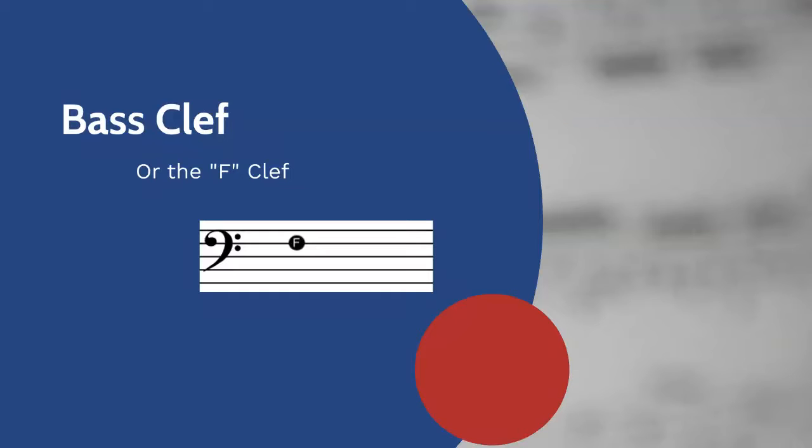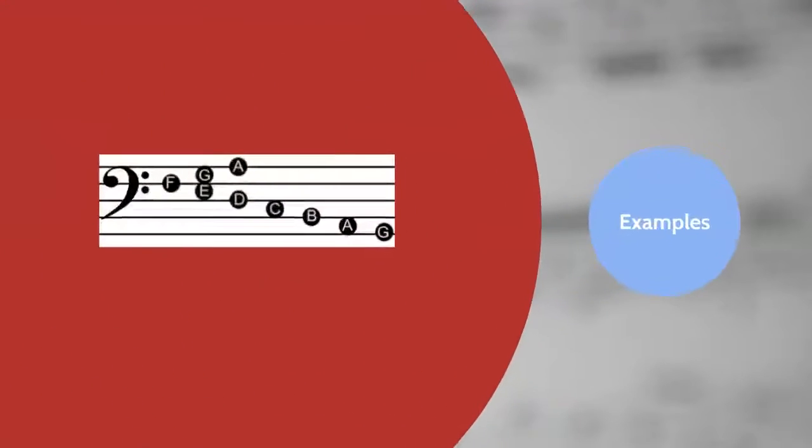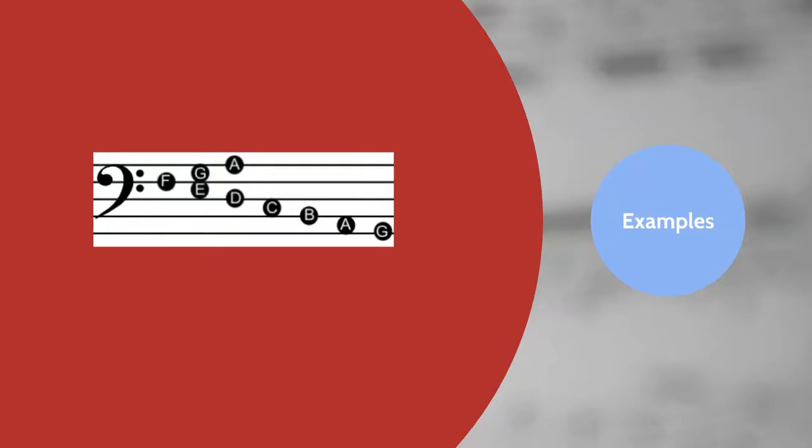The bass clef is also known as the F clef. See the two dots attached to the clef? The line that runs between them is the note F. Now that we know where F is, we can fill in the rest of the lines and spaces. Just like the treble clef, let's work our way through the note names. Walking up from F, we have G and A. Stepping down from F are E, D, C, B, A, and G. Look at the notes on this stack. Remember, once the sequence of notes arrives at G, we start again from A.